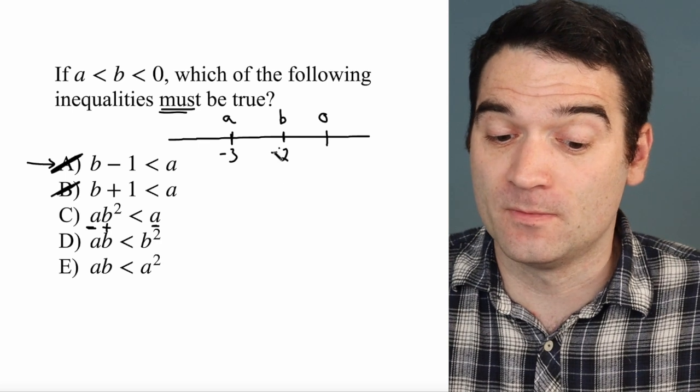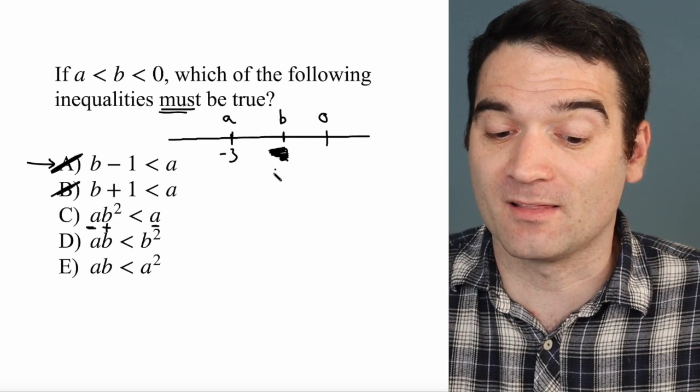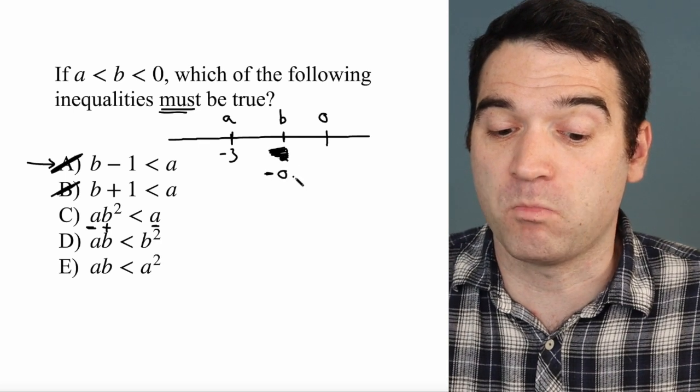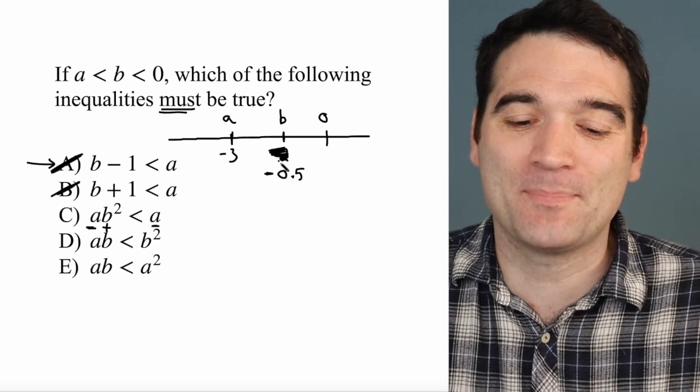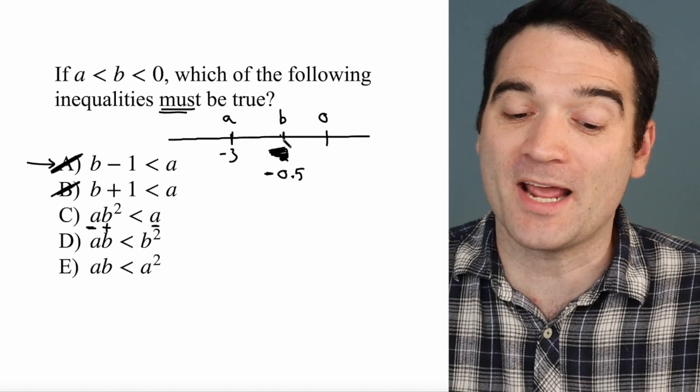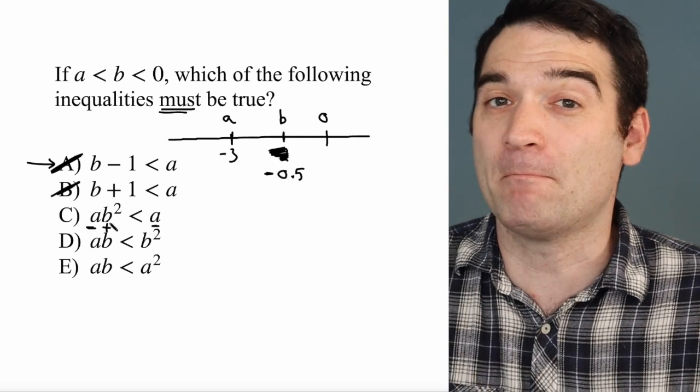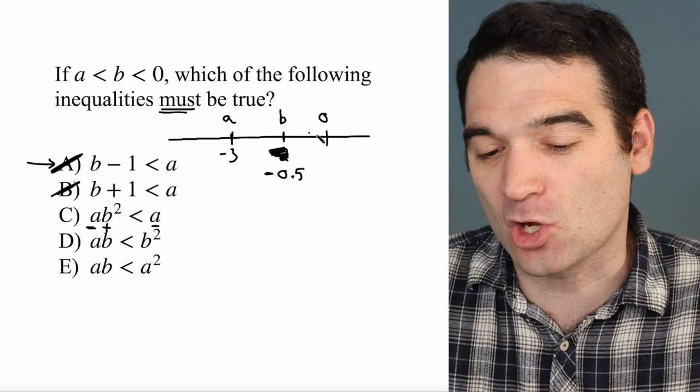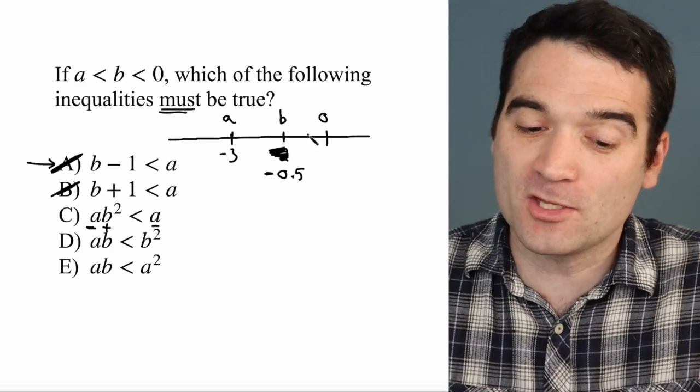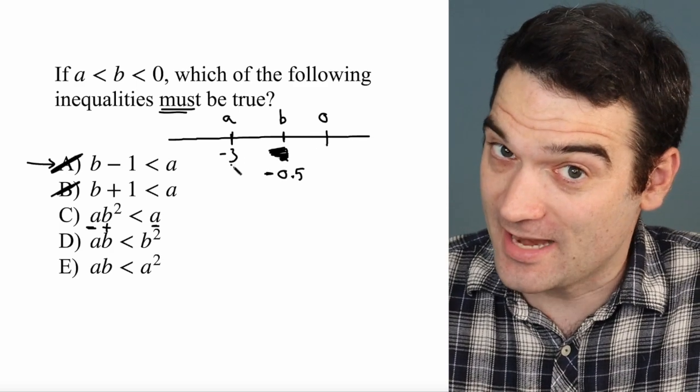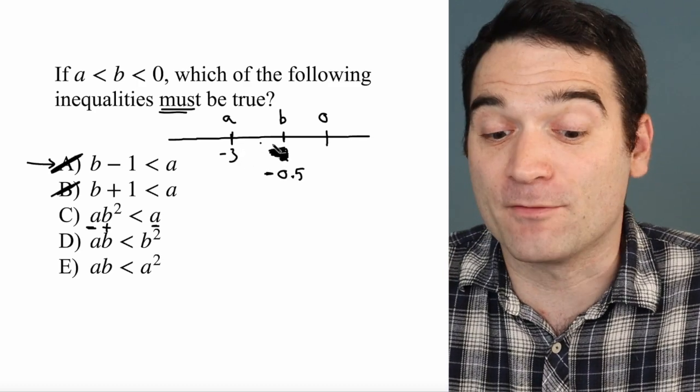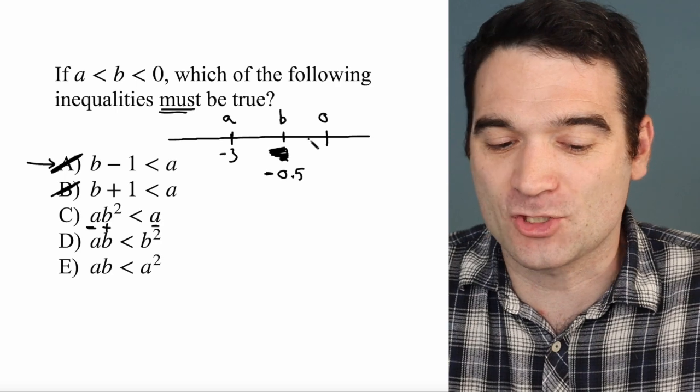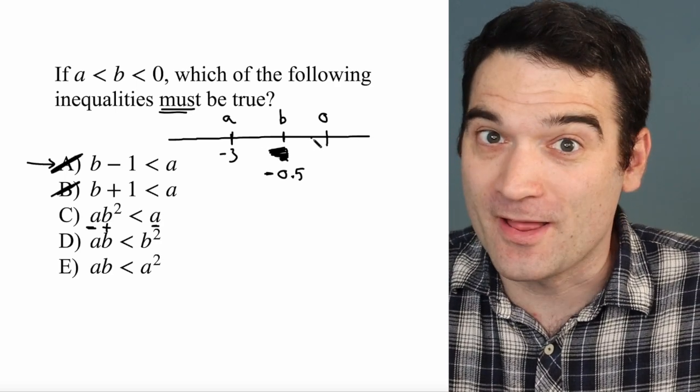Well, it's not true if B were something like negative 0.5. What happens when B is negative 0.5? Well, when I square that, when I do negative 0.5 squared, I get 0.25. It gets closer to zero. And 0.25 times negative 3 gives me 3 fourths, negative 3 fourths. So I'm moving in this direction, which is greater than A.